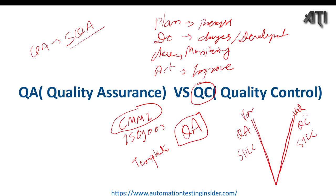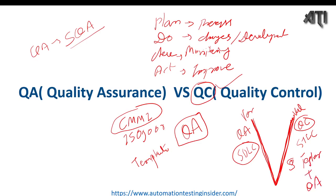Now let's talk about quality control — the other side of the V-model. QC is a software engineering process to ensure quality in a product or service; it examines the end product once the product is developed. QA applies during the development phase, and QC applies once the product is done — the testing part. QC is handled by software testers with the help of quality analysts.